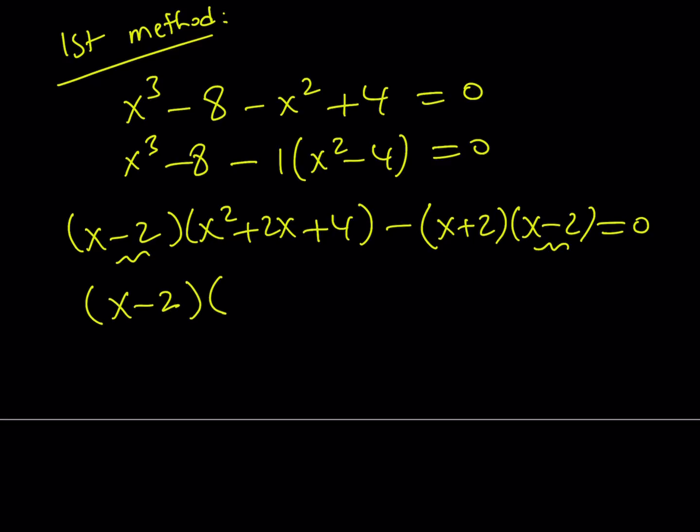And once I take it out, the rest is going to be x squared plus 2x plus 4 minus x plus 2 in parentheses. So that's going to be like minus x minus 2 since we've taken out x minus 2. And if you simplify this, you're going to get x minus 2 times x squared plus x plus 2 is equal to 0.